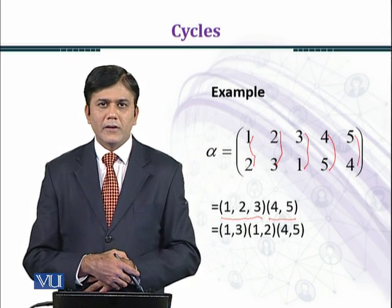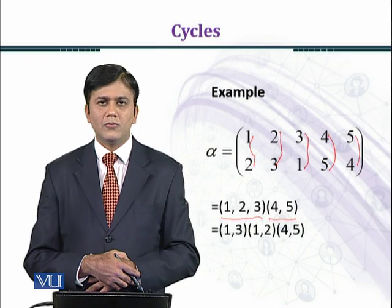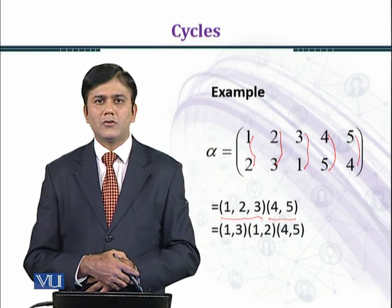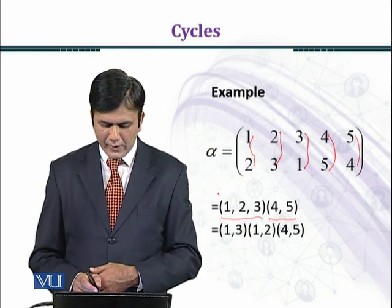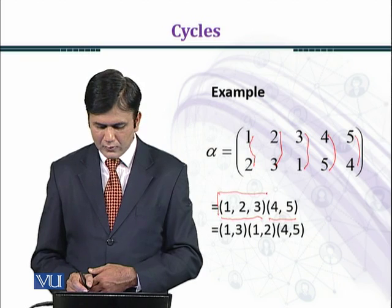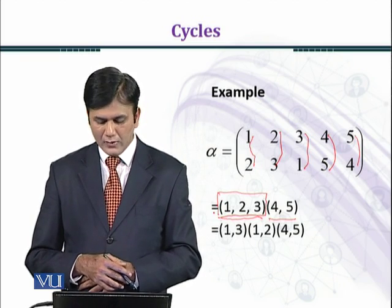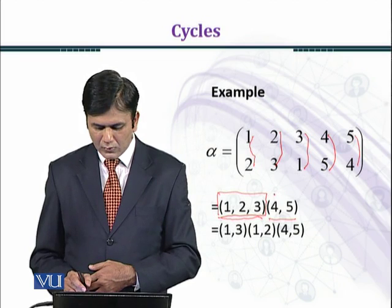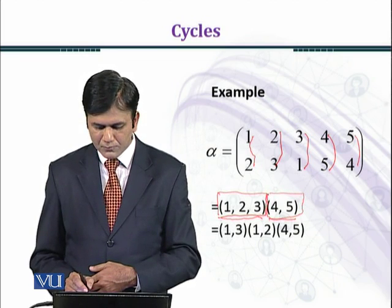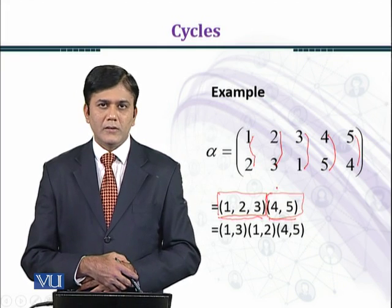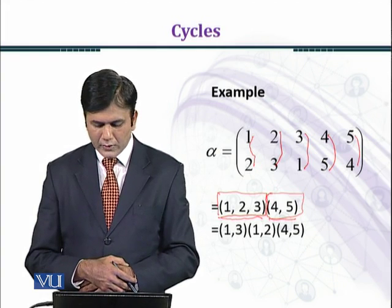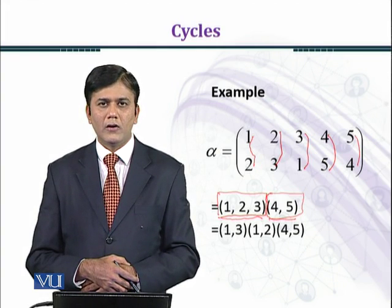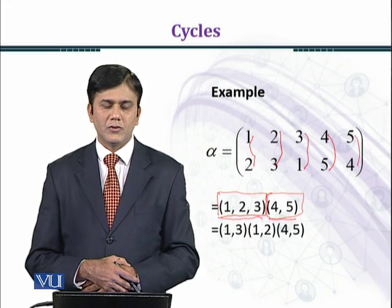Now we can write its transpositions. As you know, a permutation of length 2 is called a transposition. The length of the first cycle is 3 and the length of the second cycle is 2. The cycle (4, 5) is already a transposition. We can transform the cycle (1, 2, 3) into a product of transpositions.